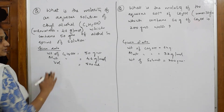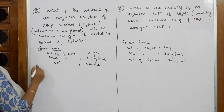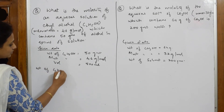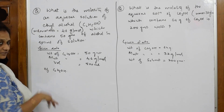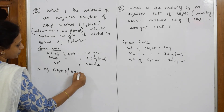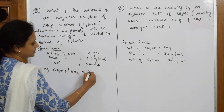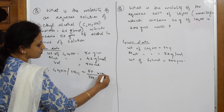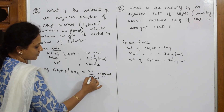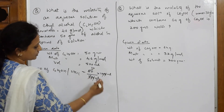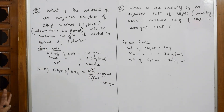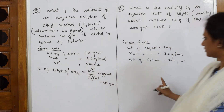Whenever such a numerical is given, first standardize it to 1000 mL. Don't directly substitute into the formula. Calculate the weight of ethanol per liter: 50 grams over 500 mL, standardized to 1000 mL, gives 100 grams per liter.